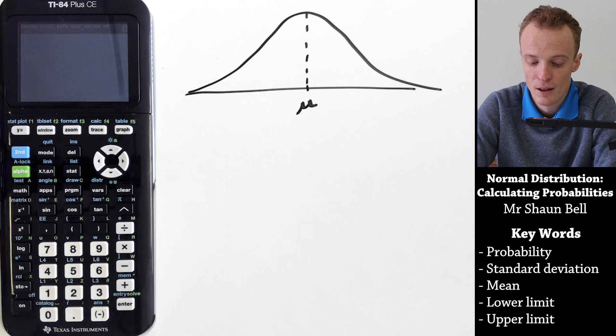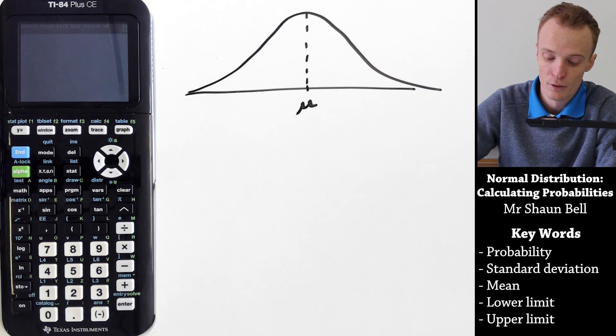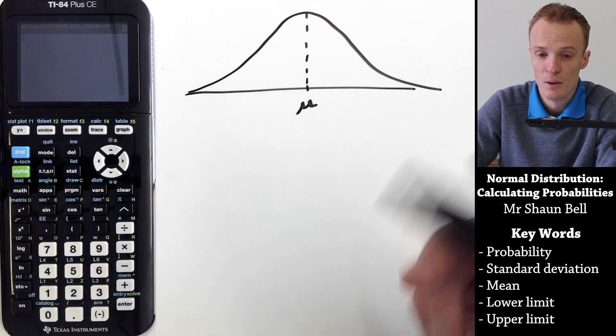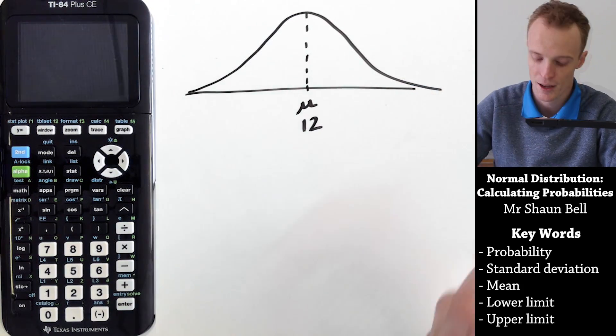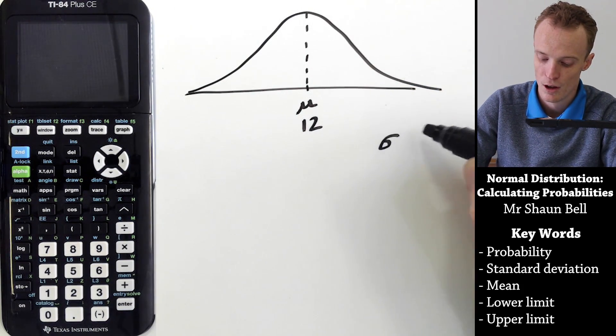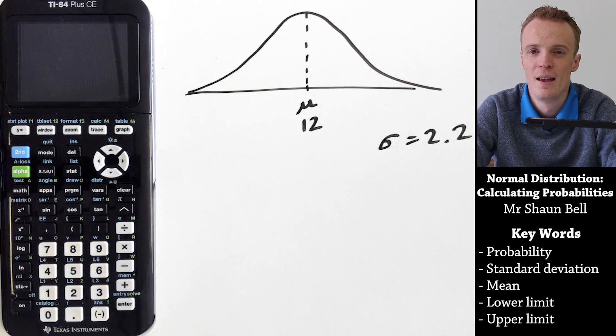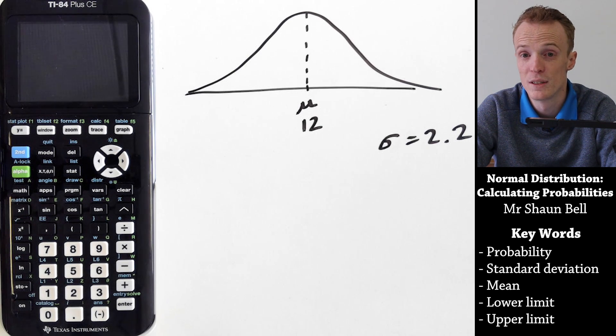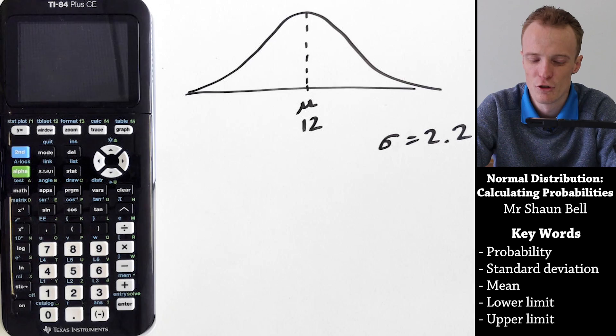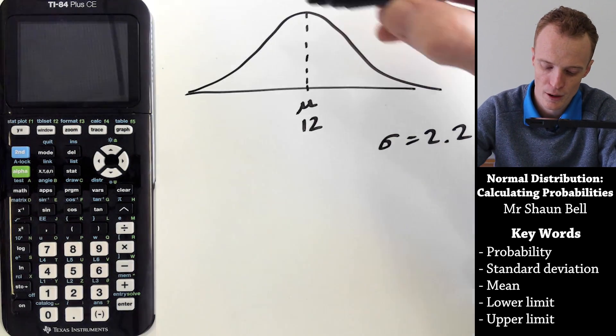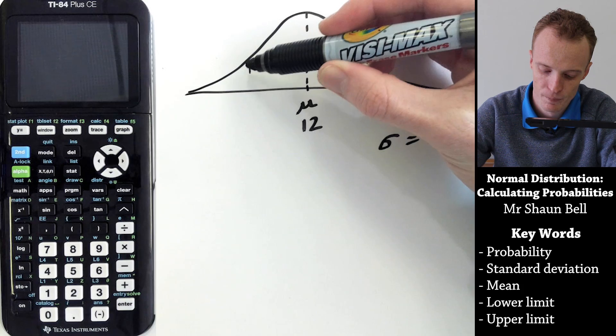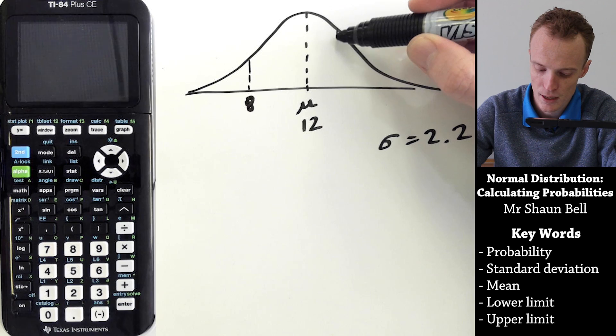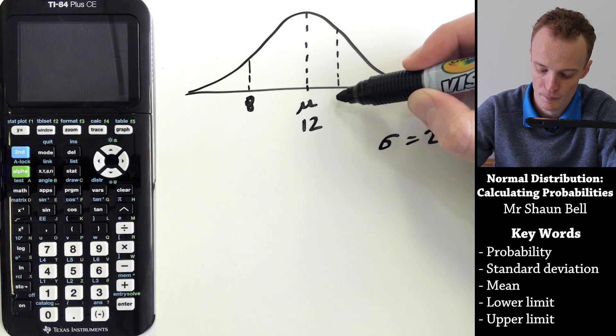Let's for the purpose of this video pretend that I'm baking cookies and this graph represents the number of chocolate chips on each cookie. The mean here we'll say is 12 and it has a standard deviation which is equal to 2.2. Let's pretend that we're aiming for each cookie to have between 8 and 14 chocolate chips. What we're essentially trying to do is work out how many of the cookies are going to be between this 8 here and the 14, which would approximately be in here.